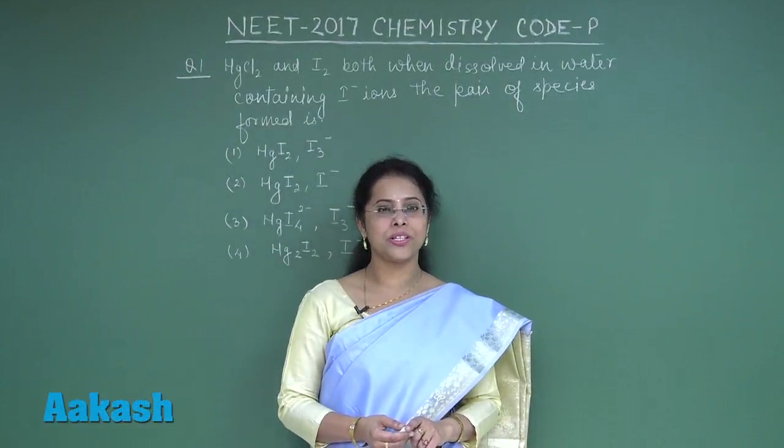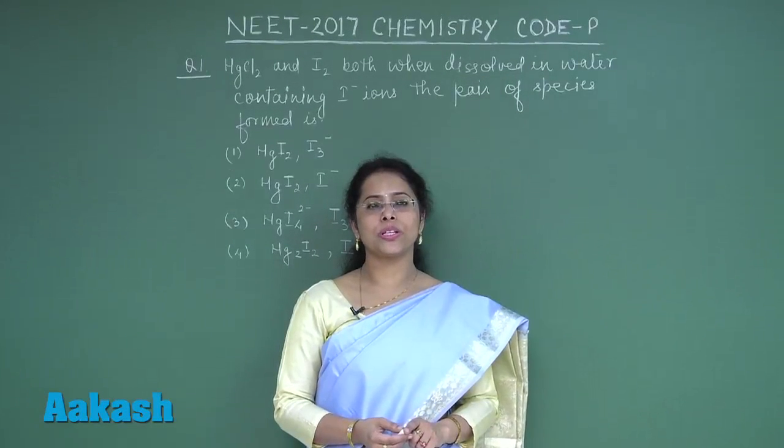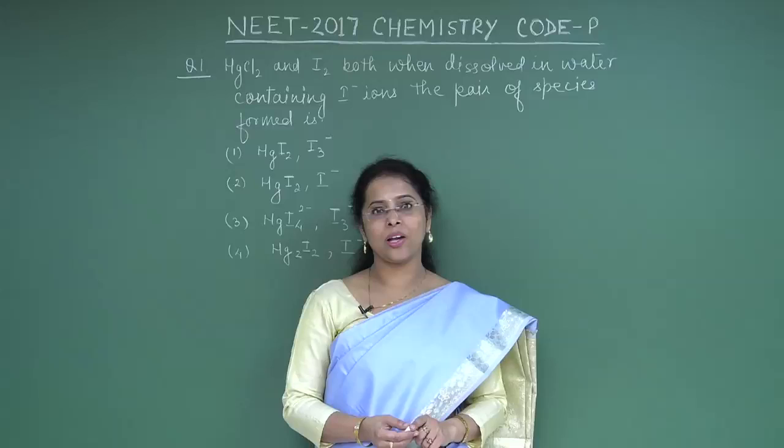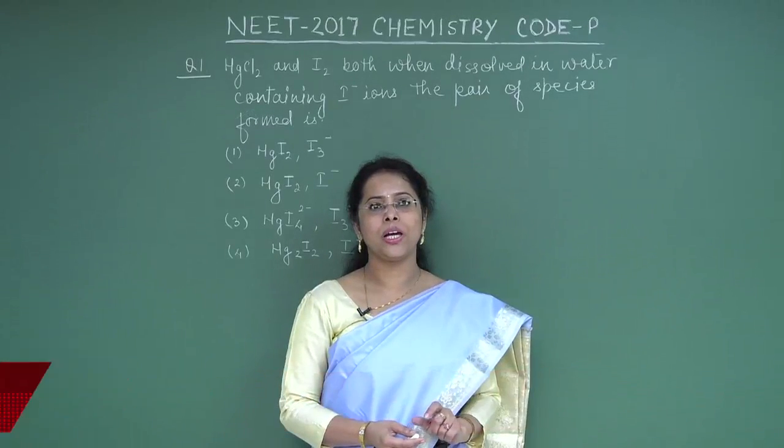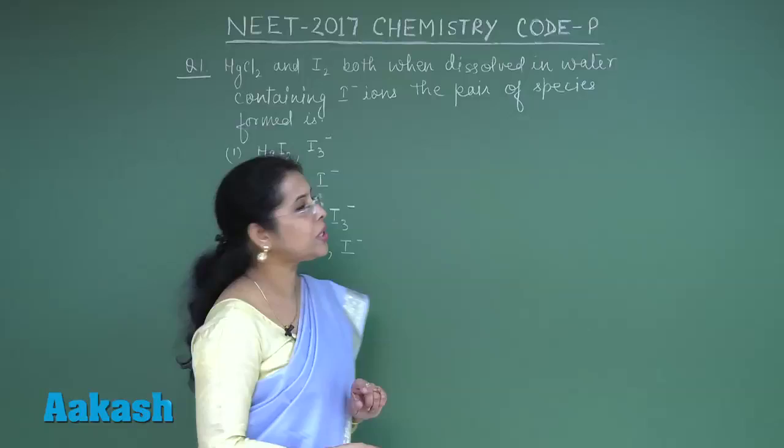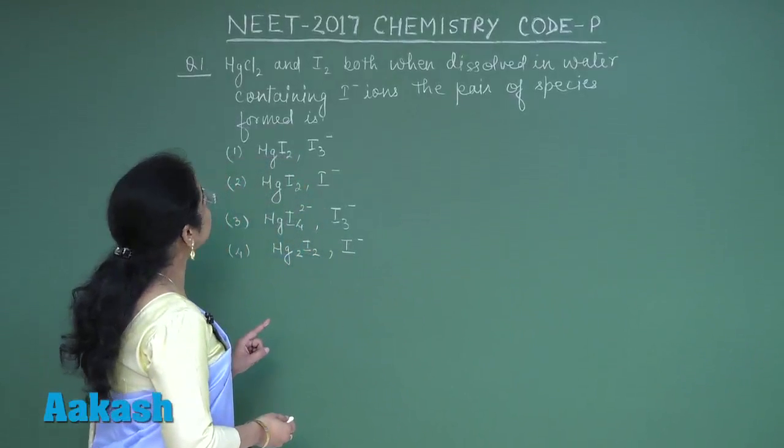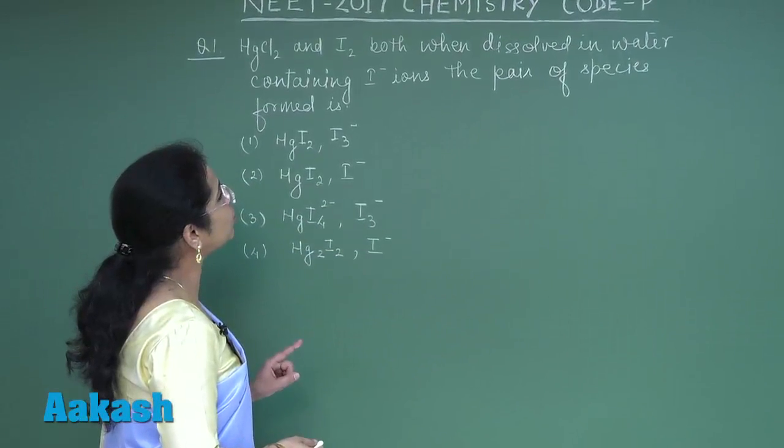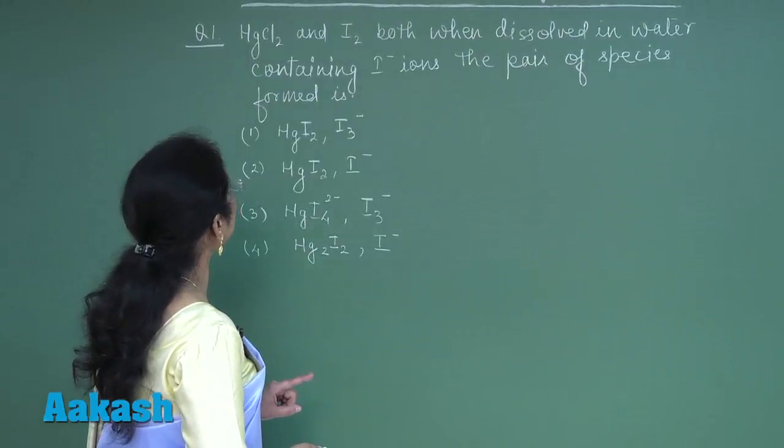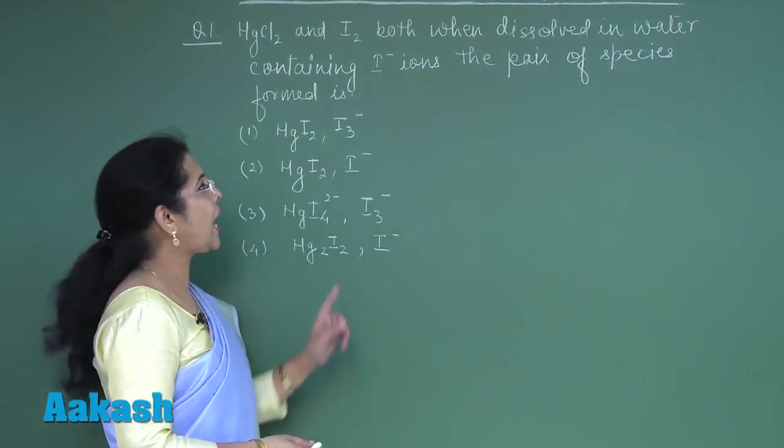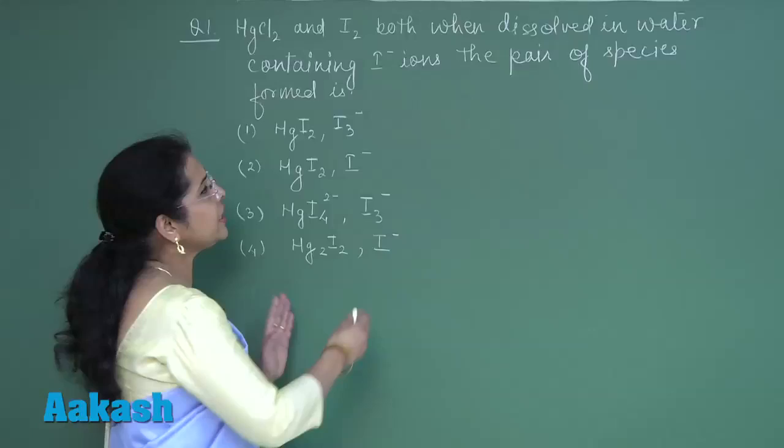Hello students, welcome to the discussion of NEET 2017 paper. Today I am here with you for the discussion of chemistry paper code P. The first question is question number one: HgCl2 and I2 both when dissolved in water containing iodide ions, the pair of species formed is. Options are given here in this question.